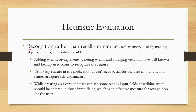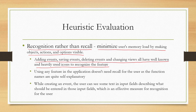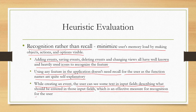The sixth heuristic is recognition rather than recall, which implies minimizing the user's memory load by making objects, actions and options visible. In the design, adding events, saving events, deleting events and changing views all have well-known and heavily used icons to recognize the feature. Using any feature does not require recall as the function names are self-explanatory. While creating an event, the user can see placeholder text in the input fields describing what should be entered, which is an effective measure for recognition.